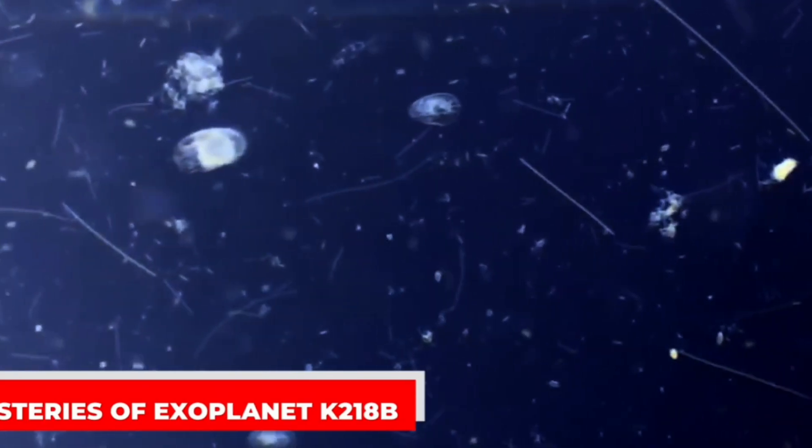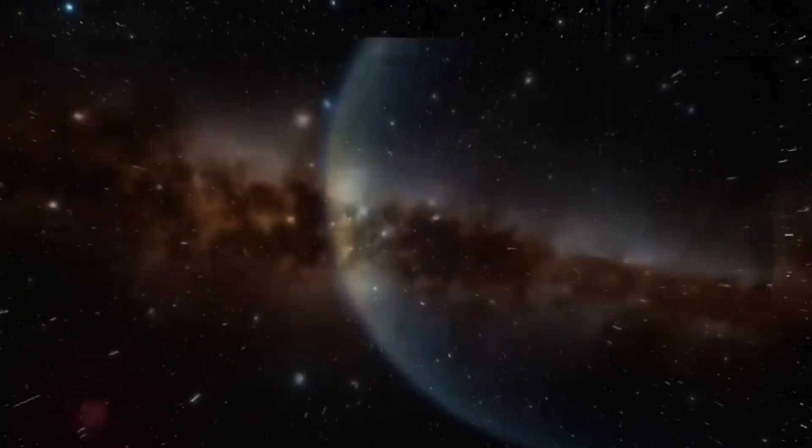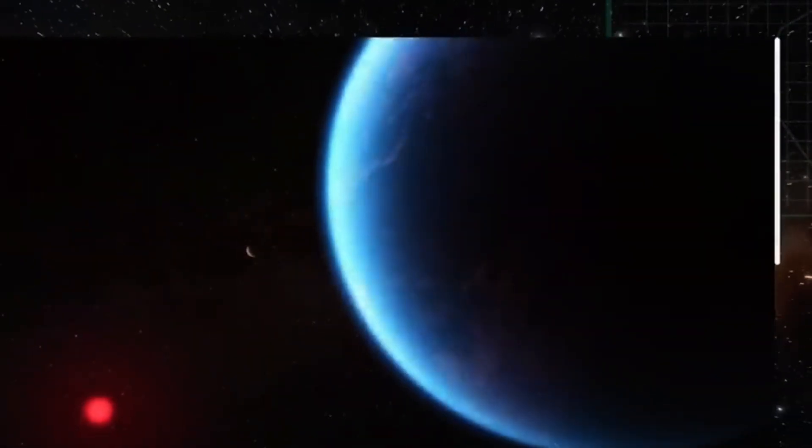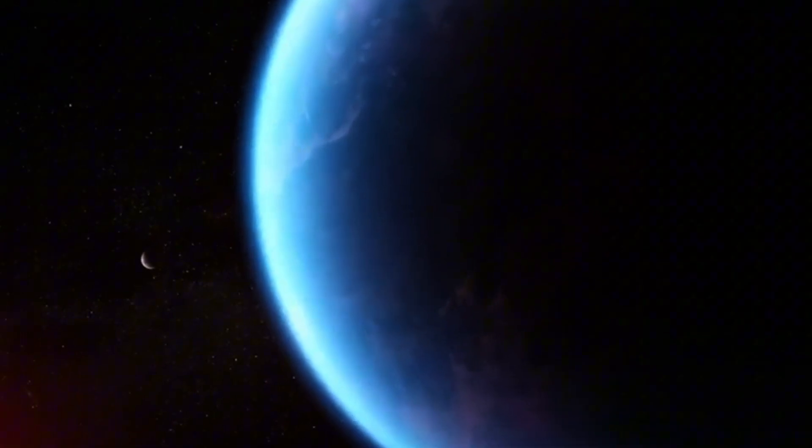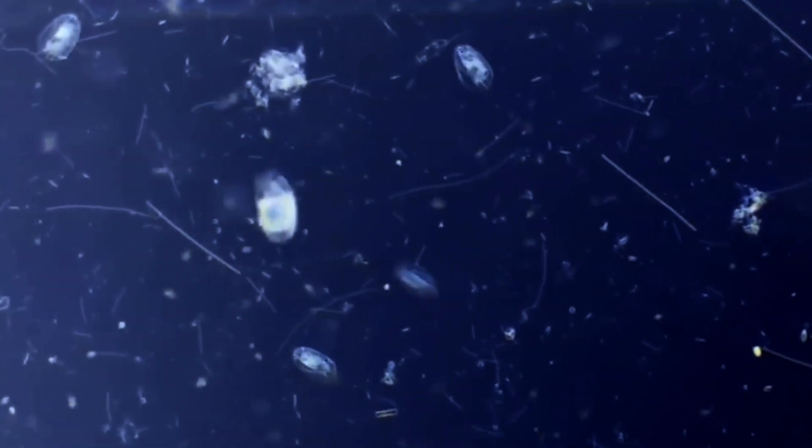Exoplanet K2-18b, significantly larger than Earth with a radius 2.6 times greater, presents intriguing possibilities regarding its composition. Its size suggests the presence of a thick layer of ice beneath its surface, likely due to the high pressure exerted.